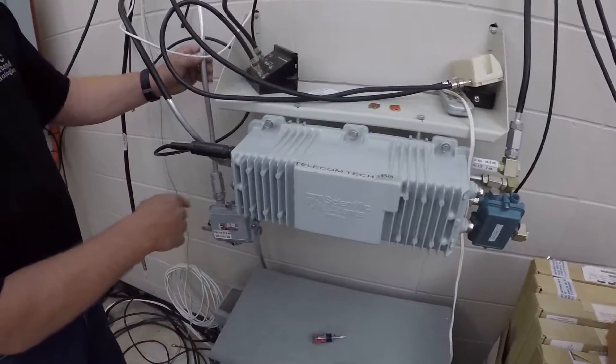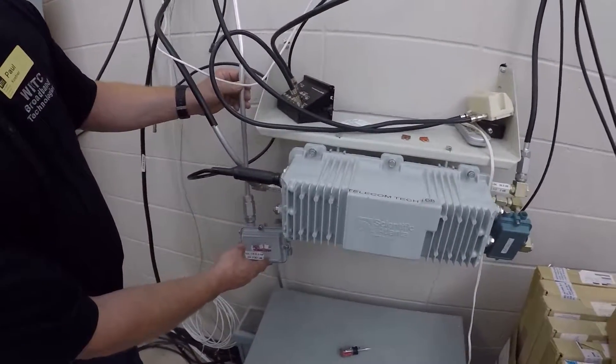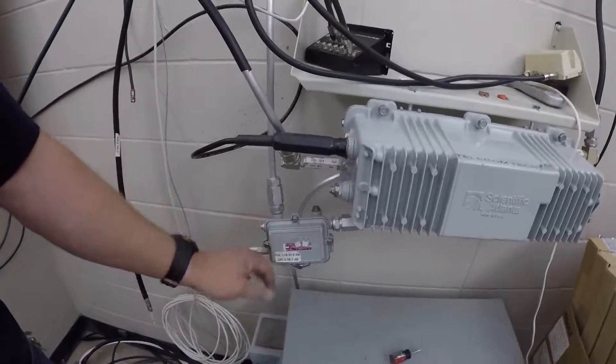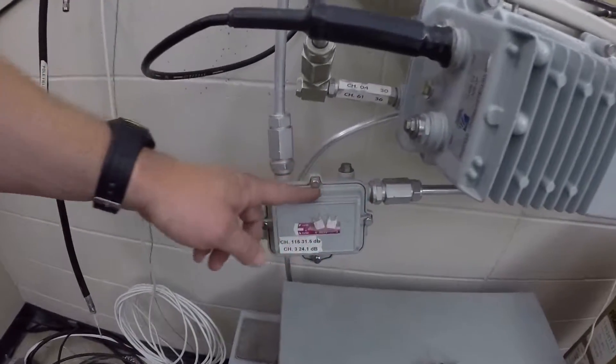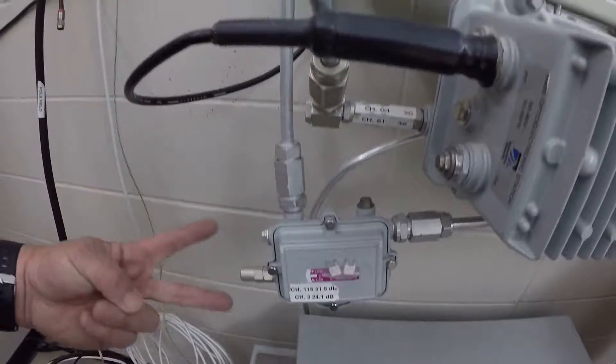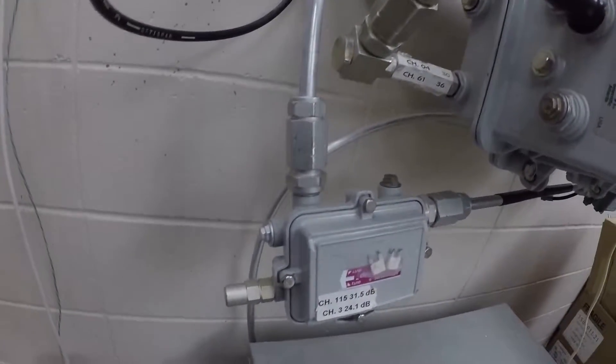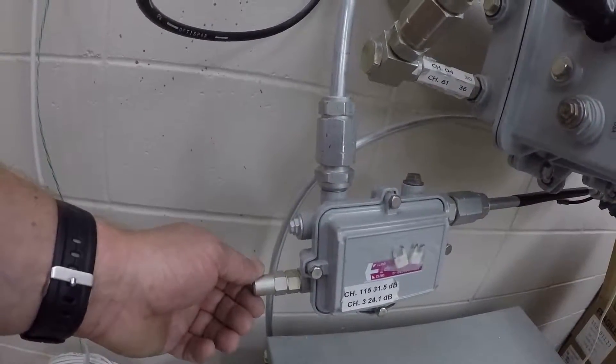Here's two more different outputs that we have. This output here. This component is called the directional coupler, where you'll have an input and then you have two outputs. It's kind of similar to a splitter, but it doesn't distribute the signal equally.